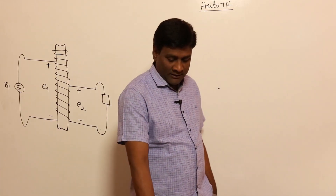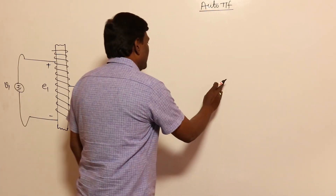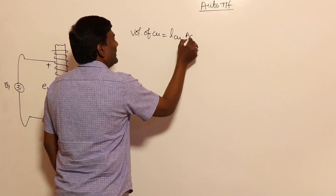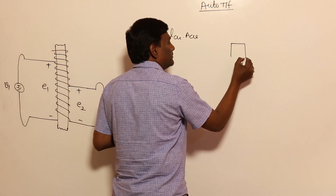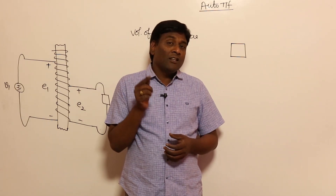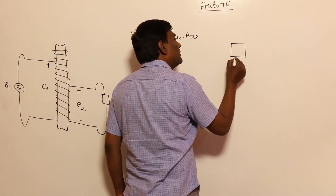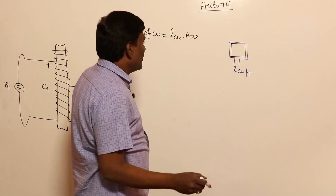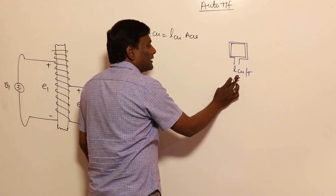One more question that can come in auto transformer is how much percentage of volume of copper is going to be saved. Volume of copper equals length of copper multiplied by area of cross section of copper. The length of copper per turn is the perimeter (circumference) of the area of cross section of the core, so total length of copper equals length per turn multiplied by number of turns.